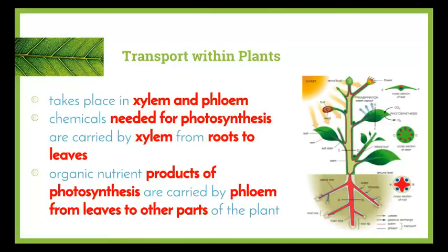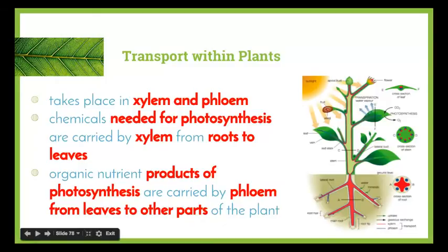So far we've been looking at transport within animals, in particular the different vessels involved — veins, arteries, and capillaries — and the substances transported in the blood. Now we need to look at the same kind of thing but with plants. Transport within plants takes place in two vessels known as xylem and phloem, which we touched on in Year 11.